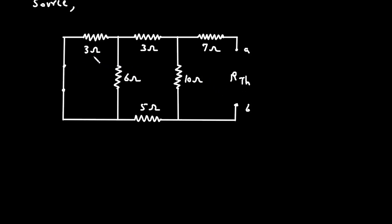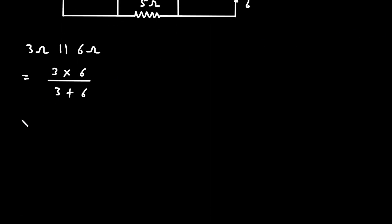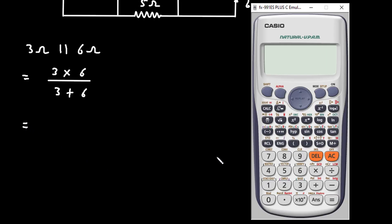Now we can see this 3 Ohm and 6 Ohm are connected in parallel. So 3 Ohm parallel with 6 Ohm — it will be 3 into 6 divided by 3 plus 6, which equals 2 Ohm.